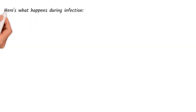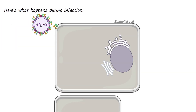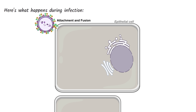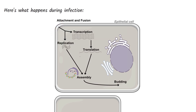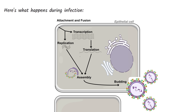During infection, the G protein attaches to the host cell, and the F protein helps fuse the viral envelope with the cell membrane so viral RNA and proteins can enter the cell. RSV replicates in the cell and can spread to other cells through budding. RSV can also spread cell to cell when the F protein promotes membrane fusion and syncytia formation between neighboring cells.